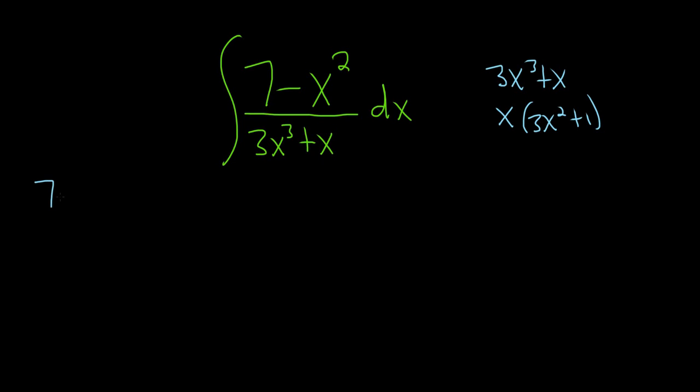So let's try that. So we have 7 minus x squared over x parentheses 3x squared plus 1.